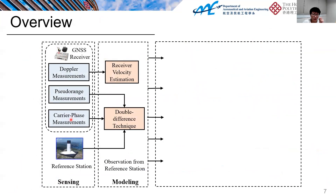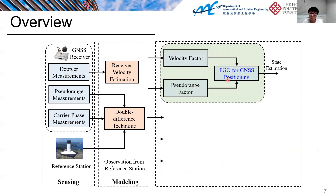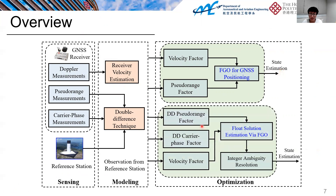The overview is: in the sensing part, we get measurements from the Doppler, the pseudorange, and the carrier phase. We then estimate the receiver velocity based on the Doppler measurement, and formulate the factor graph-based equations using the velocity factor and the pseudorange factor, and finally do the optimization to get the estimated state. We also do double difference modeling and factor graph optimization for real-time kinematics to estimate the float solution, and finally the integer ambiguity is estimated using the LAMBDA algorithm to get the fixed solution.